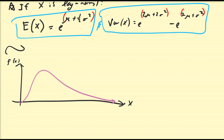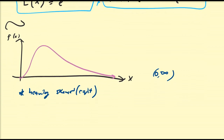A couple observations if you believe that this sketch is true: this is going to be a heavily skewed to the right distribution. Since the support is zero to infinity, most of the data is going to be on the left with pretty much nothing on the right hand side.